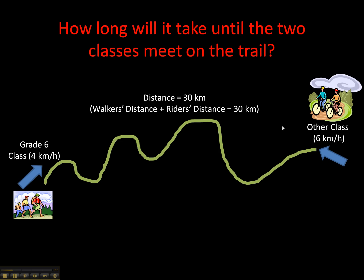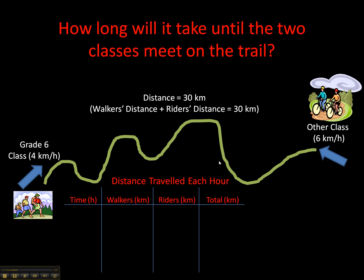It's important to realize that the walkers' distance plus the riders' distance needs to equal 30 km. Wherever they meet up on the trail, the distance the walkers accomplished plus the distance the riders accomplished will equal 30 km. That's how we're going to know when to stop on our table of values.